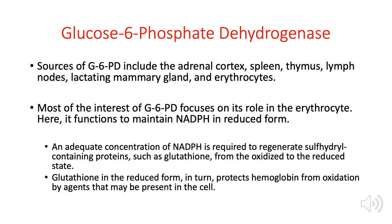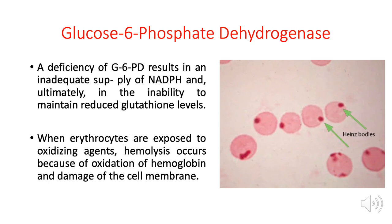An adequate concentration of NADPH is required to regenerate sulfhydryl-containing proteins — the most important being glutathione — from the oxidized to its reduced state. Glutathione in its reduced form protects hemoglobin of red blood cells from oxidizing agents. A deficiency of glucose 6-phosphate dehydrogenase leads to inadequate NADPH production and consequently failure to reconvert oxidized glutathione to its reduced form.